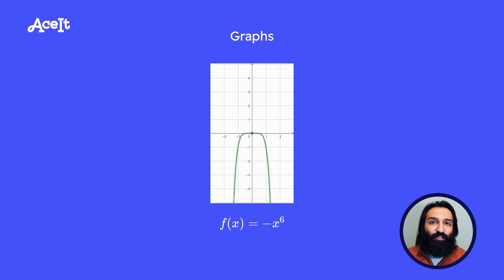If the leading coefficient has a negative value, then the graph is actually flipped. So for example, if we had negative x to the sixth, the graph for that would no longer be a u that's facing upwards, it would be a u that's facing downwards. So it's like a smile turned upside down.